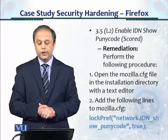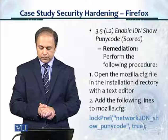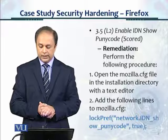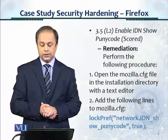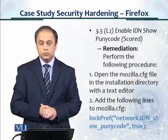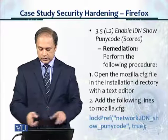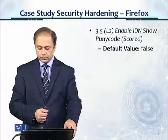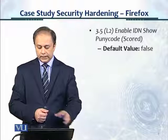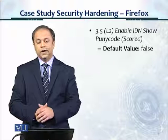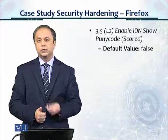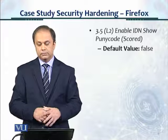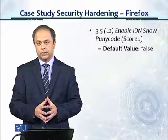For the remediation, perform the following procedure: open the Mozilla.cfg file in the installation directory with a text editor. Add the following lines to Mozilla.cfg — the blue code shows that punycode should be set to true. The default value is false, so this is a setting we should actually go and apply in Mozilla to make it a safer browsing experience.